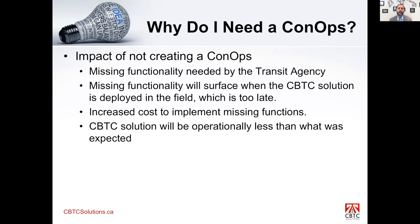They'll ask things like, 'I'd like to do this,' or 'Why can't the system do that?' By this point it's too late, because the cost to implement functionality at the end of the project in the field deployment phase is very expensive, and in some cases it may not even be possible. So a CBTC solution will operate less than what was expected of it. A con ops is there to pull these user-type requirements from frontline personnel before the project begins.